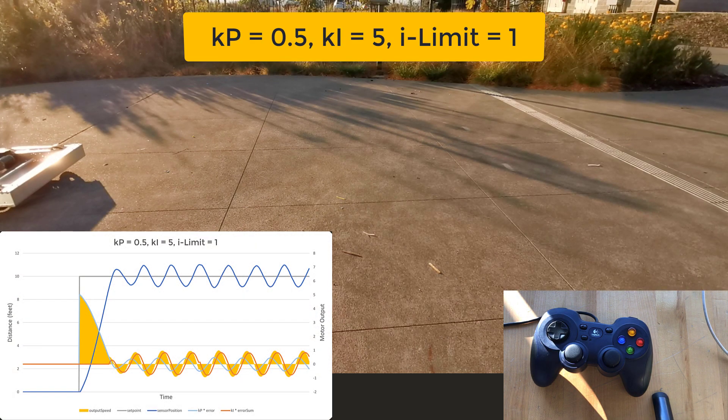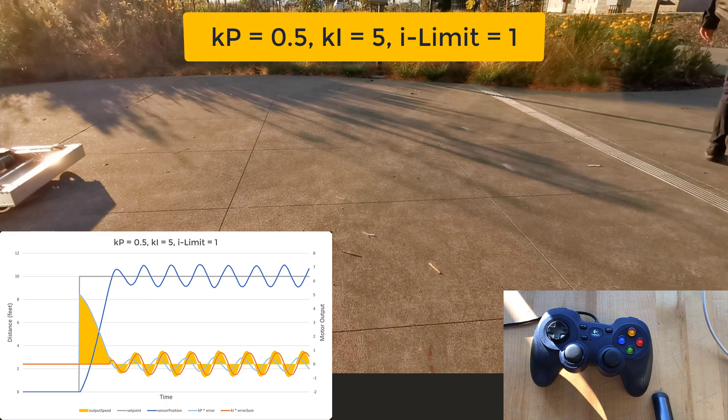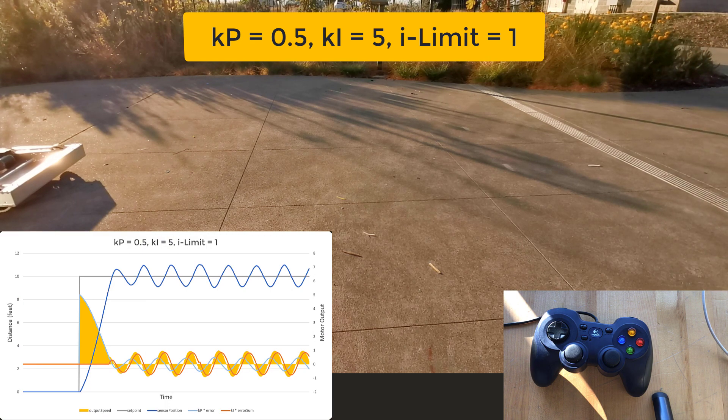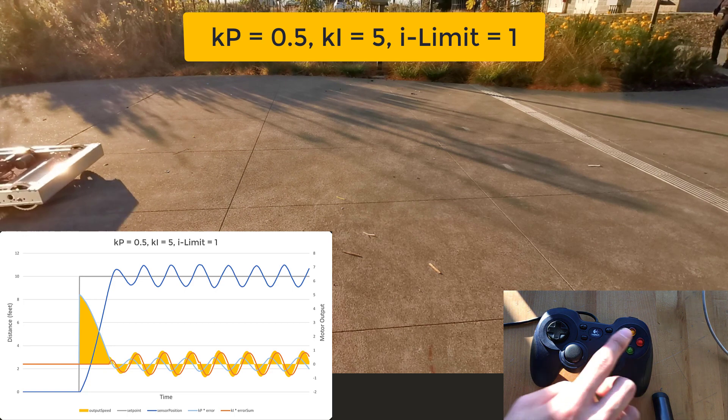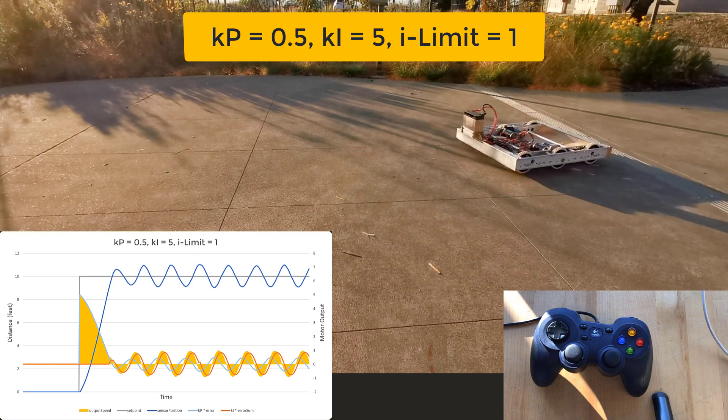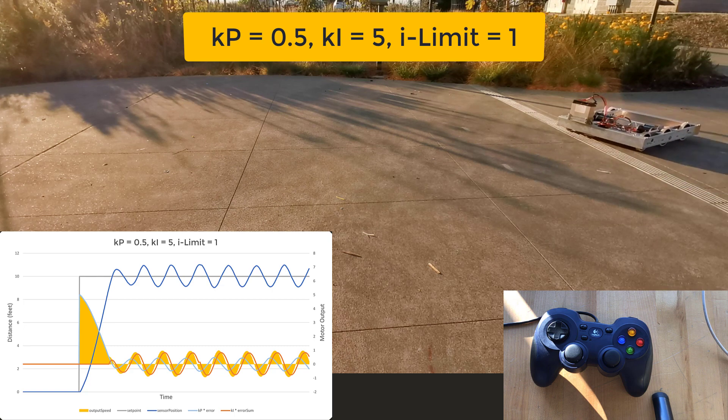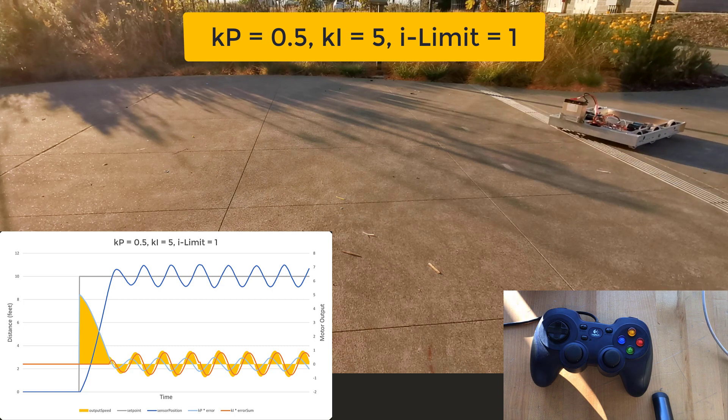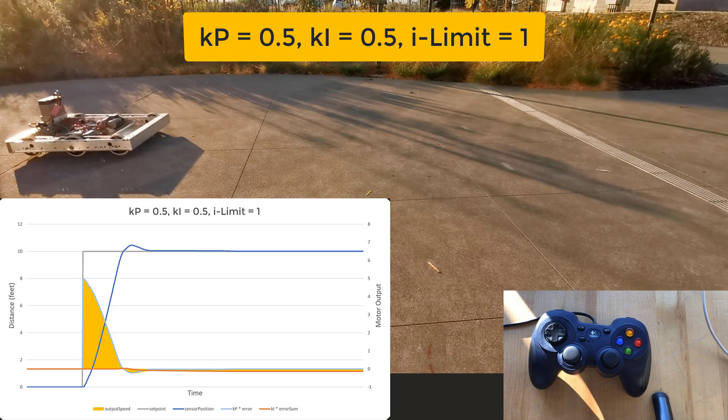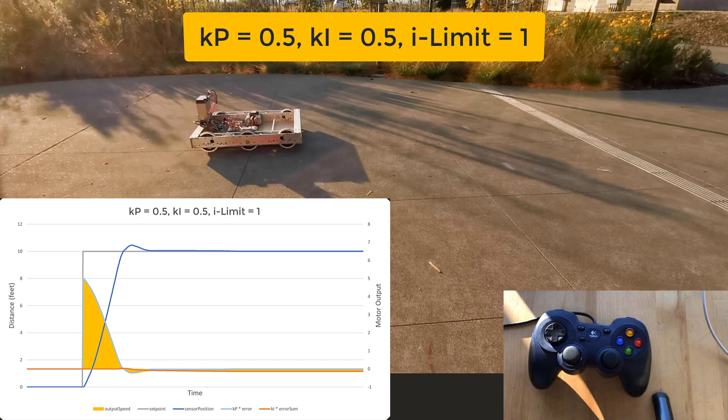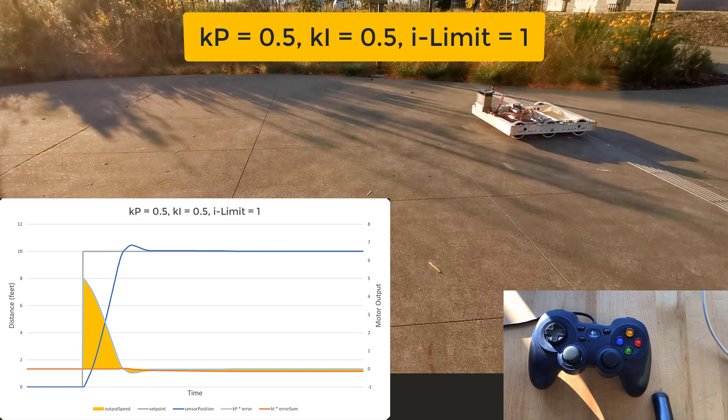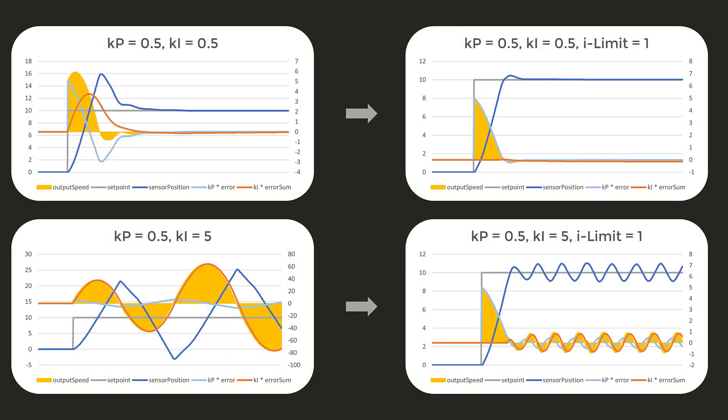Let's repeat the test when KI equals 0.5 and 5. Except this time with the integration limit of 1 foot. As we can see, the problem is not completely solved, but it is significantly better. The overshoot and the oscillation are smaller.